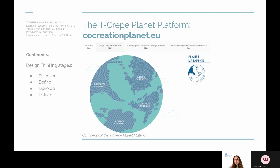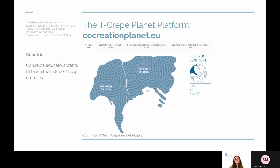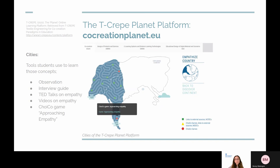The continents correspond to the four stages of this methodology. For instance, if we click on Discover Continent, we see these countries: Empathize Country and Exploring Country. These countries are the concepts educators want their students to learn, such as empathy. If we click on Empathize Country, here we see these cities, and the cities are the tools that students can use to learn these concepts. The green squares are external links to sources such as TED Talks on empathy, articles about empathy, and interview guides. The red circles represent the Choiko games, which are specifically designed for teaching this concept by our internal and external academic and industry partners. These Choiko games are the main contribution of this platform, and you will see these games in almost every country.